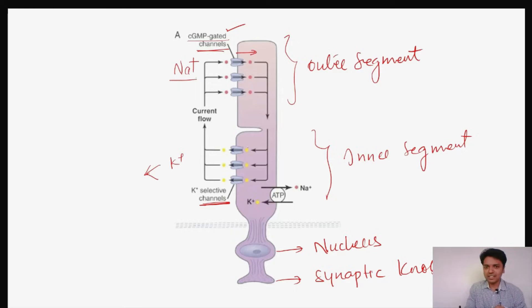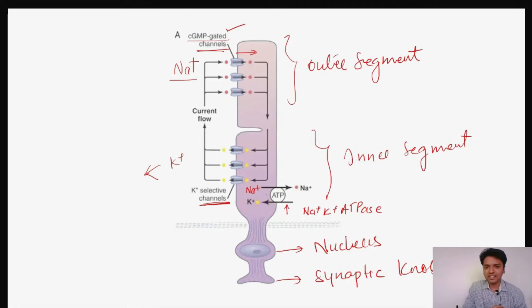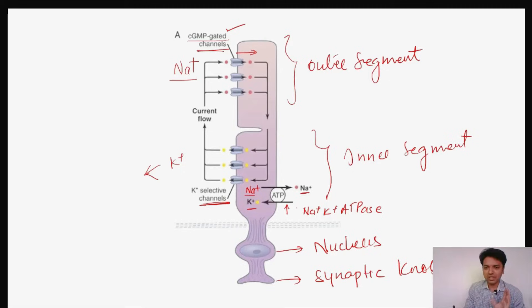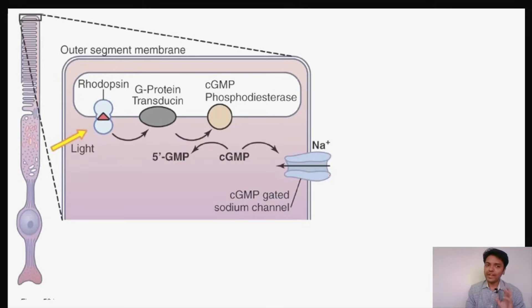Sodium enters the cell via cyclic GMP-gated channels. In the inner segment there is a sodium-potassium ATPase pump. This pump moves the sodium that has entered inside back out, and pumps potassium in. Whatever potassium is pumped in then leaks out via potassium channels — this is the steady-state in the dark.